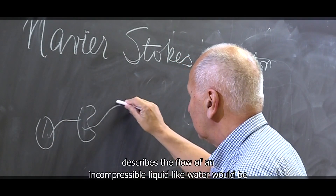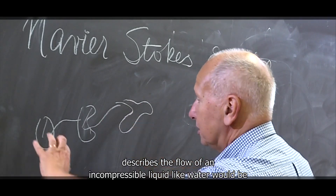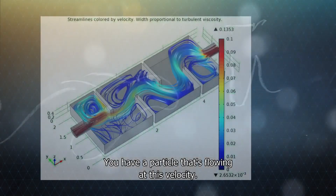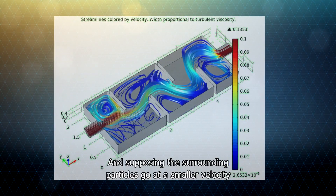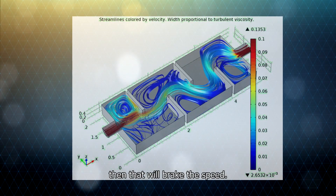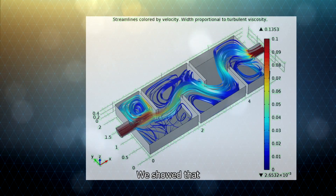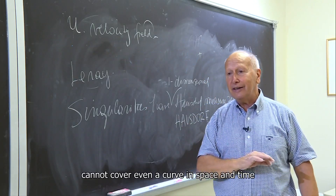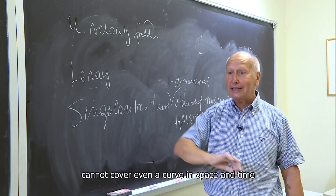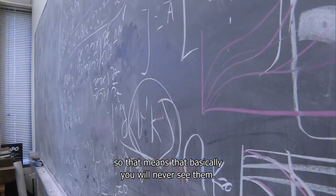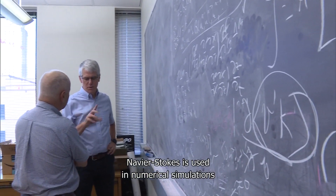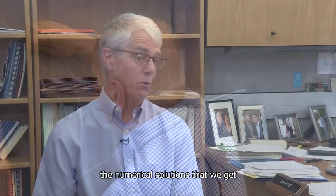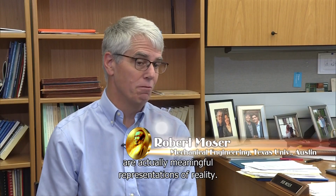The Navier-Stokes equation describes the flow of an incompressible liquid, like water, but that has viscosity. You have a particle that is flowing at this velocity, and suppose that the surrounding particles go at a smaller velocity — that will break the spin. We show that if the solution of the Navier-Stokes equation happens to have singularities, these singularities cannot cover even a curve in space and time, so basically you will never see them. Navier-Stokes is used in numerical simulations all over the world thousands of times a day.